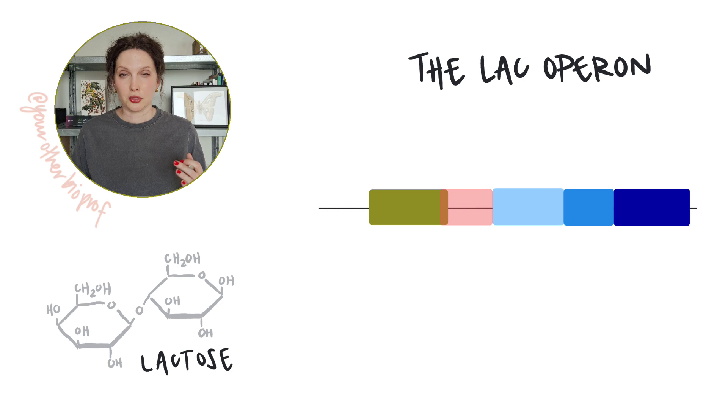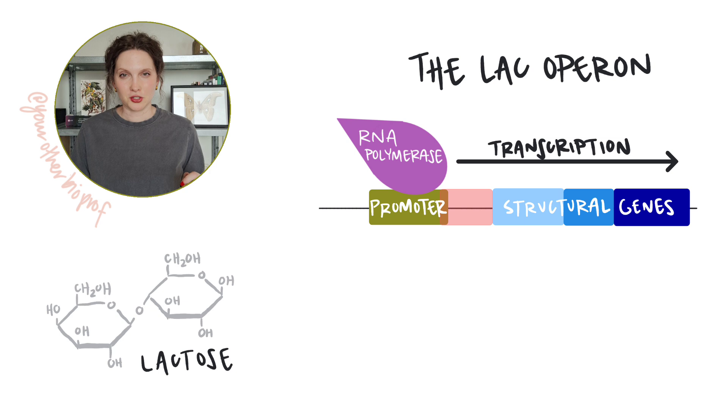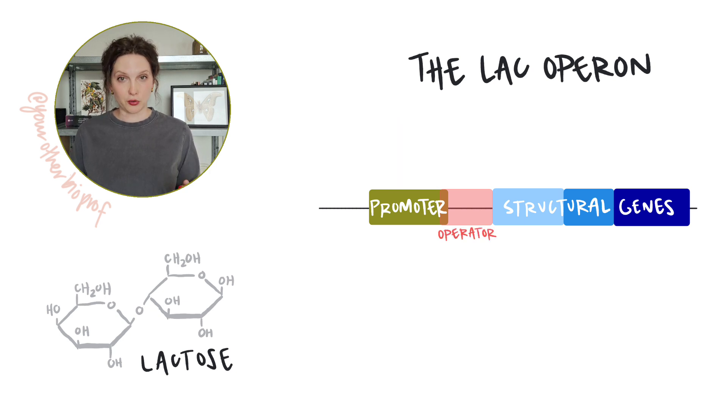In the lac operon, three protein-coding genes, or structural genes, are organized back-to-back under the control of a single promoter, often labeled P or lac P in diagrams. Remember, the promoter is where RNA polymerase will bind in order to initiate transcription. In between the promoter and the structural genes, you'll find a sequence called the operator, lac O or O on diagrams. And the operator is a site where proteins can bind in order to regulate expression of the lac operon. And that's your basic operon structure.